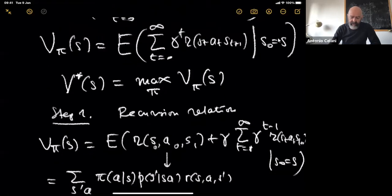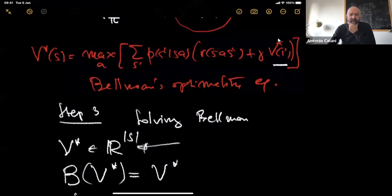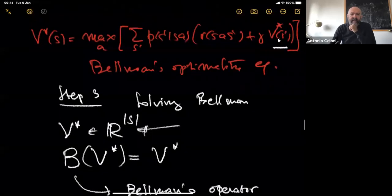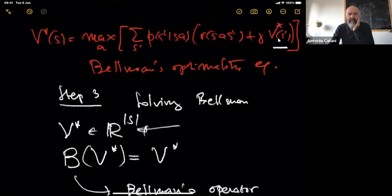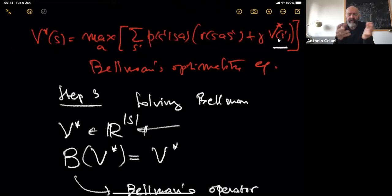Given that objective, we introduced the value function and asked for maximization. After a little set of manipulations — mostly formal, some inequalities — we end up with Bellman's optimality equation. We then face the question of how to solve it. Since it's not a linear equation, and our optimal value function V* is a vector in a finite-dimensional space with components V*(s) for each state, the Bellman operator is a nonlinear operator acting on this vector and returning another vector.